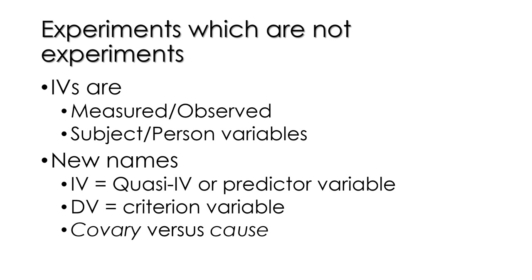Now that we're doing quasi-experiments, we have some new names. Independent variables are now called quasi-independent variables, or quasi-IVs, to remind us that this is not a manipulated independent variable — it's not a true independent variable. Sometimes we'll also call these quasi-IVs a predictor variable, because they're used to predict something else, which could be a dependent variable. We still use the term dependent variable in quasi-experiments.